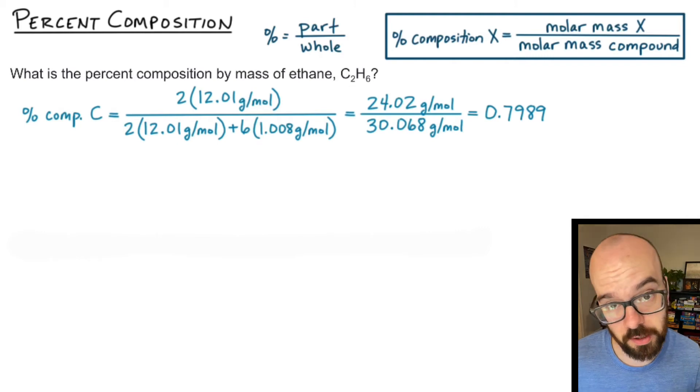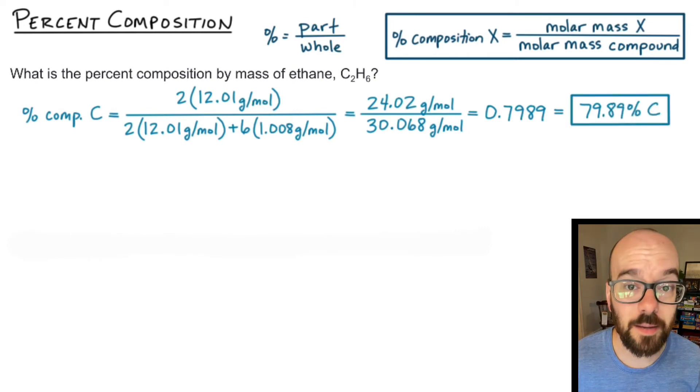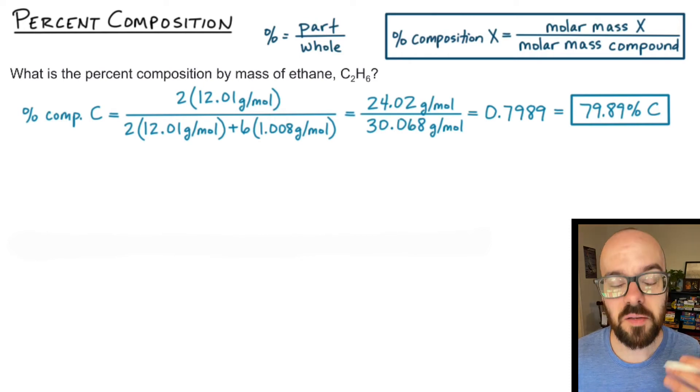When I divide that I get 0.7989. Now that's written as a decimal to convert that to a percentage, you multiply by 100%, and so I'm going to get 79.89% carbon. So what does that mean? Even though this compound only has two carbons but has six hydrogens, because carbon has a greater mass than hydrogen, 79.89% of this compound is actually made up of carbon. So it's mostly carbon, about 80%.